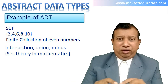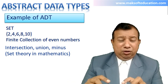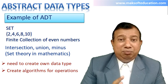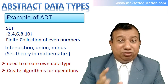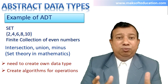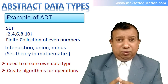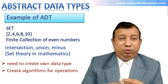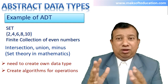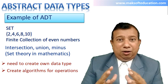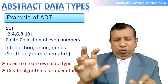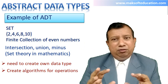When we describe set as an abstract data type, the model contains finite values and possible operations: intersection, union, and minus. Set theory is available in mathematics, but to use it in a programming language, we cannot use a built-in data type. We have to define our own data type 'set' and write algorithms for these operations. When writing programs for real-life applications, we need to create such custom data types and develop our own abstract data types.